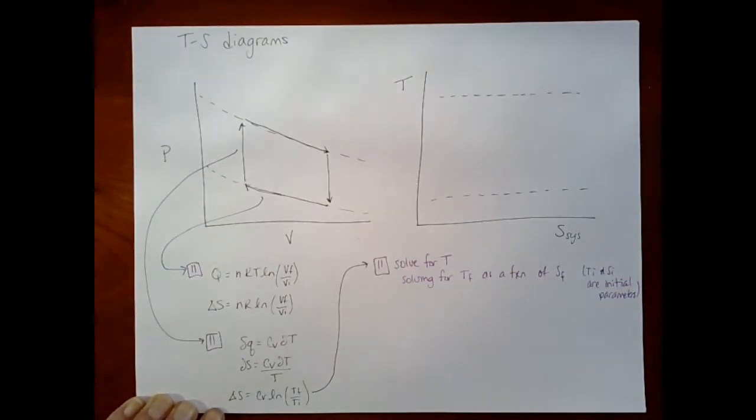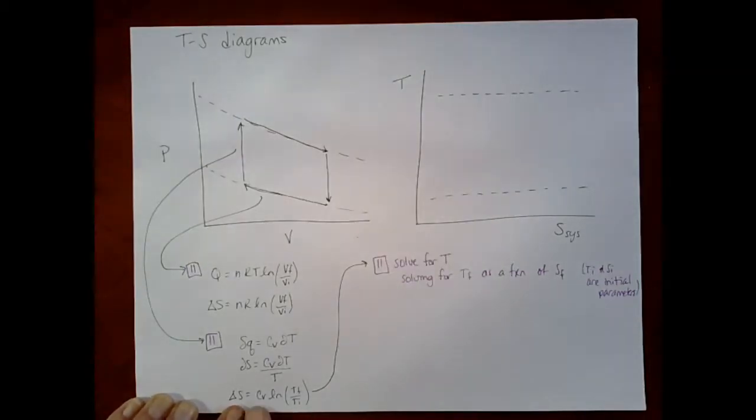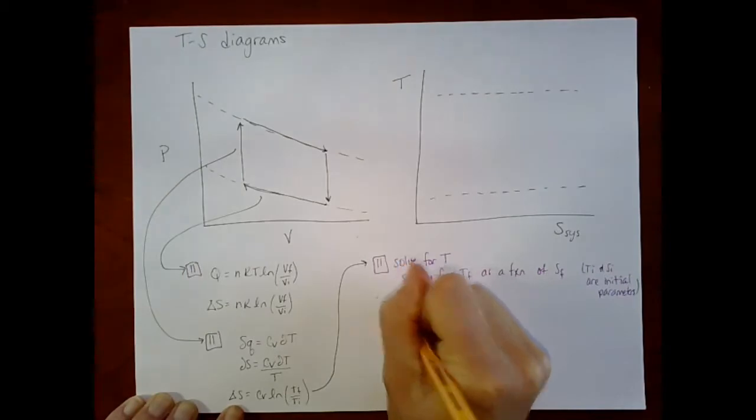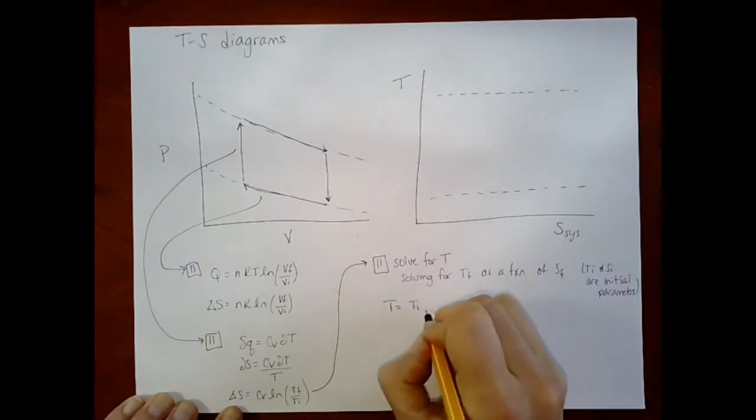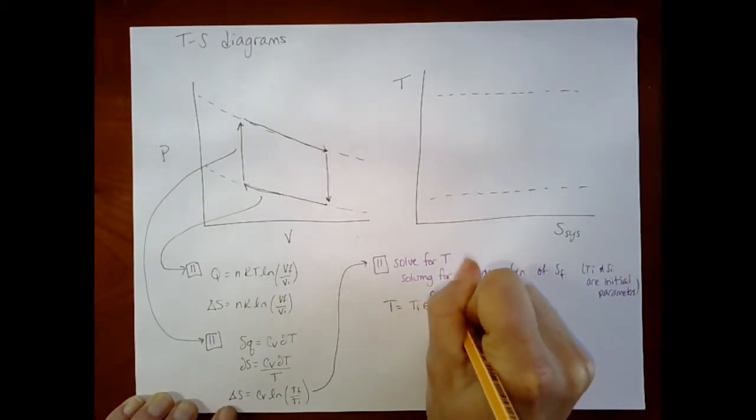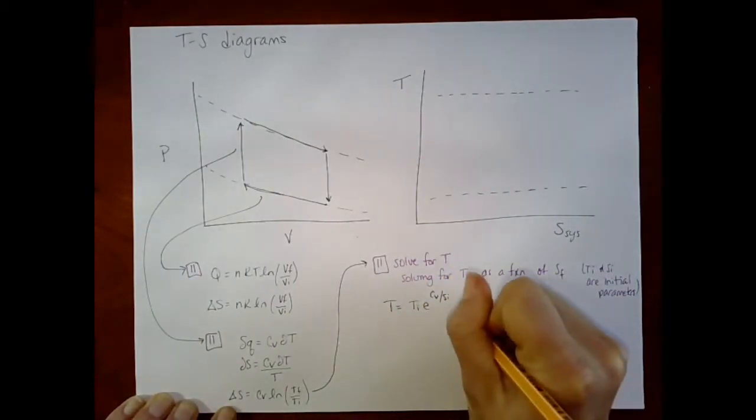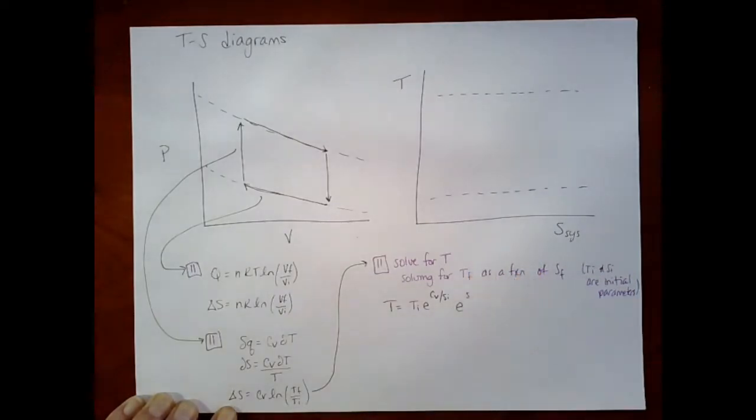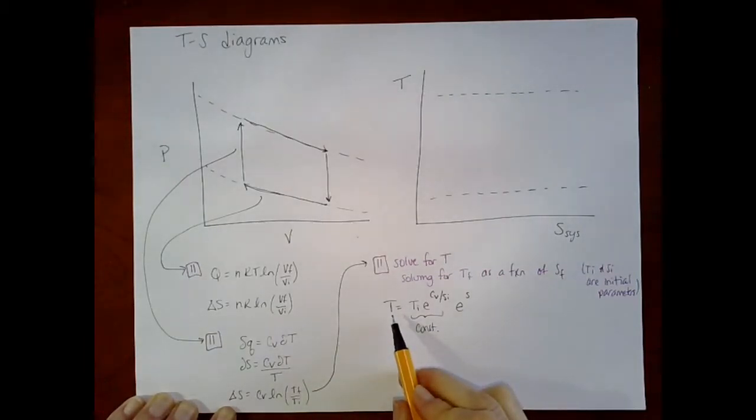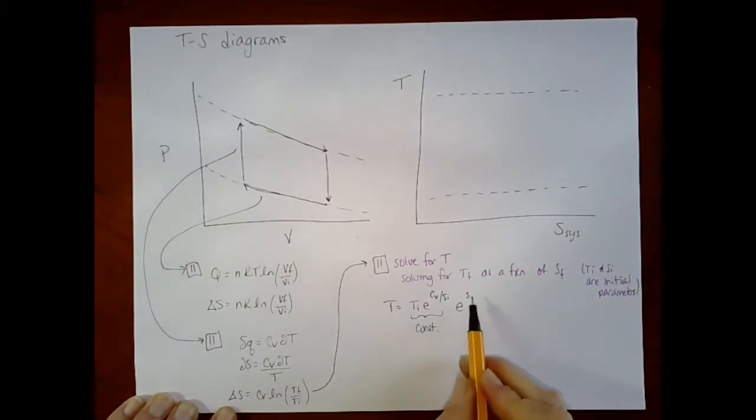Alright, so unpausing. When I solve this equation, I end up getting that temperature is T initial times e to the S initial over Cv times e to the S over Cv. So what we're seeing is that there's some constant factor and temperature then is an exponential function of entropy for a constant volume process. I'm not going to, these steps are just algebraic, so I don't think I'll work them out.